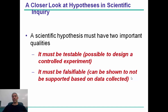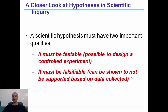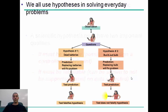For example, if someone claims there are fairies flying around their head, and when challenged they say 'they're just invisible,' at some point you must be able to test the claim and falsify it. If someone just keeps giving excuses, it's not falsifiable. Can the hypothesis be shown not to be supported if we collect data on it? Usually there is some data we could collect that could show the hypothesis doesn't work. We use hypothesis-driven and scientific problem solving for everyday problems, which is why it's so important.